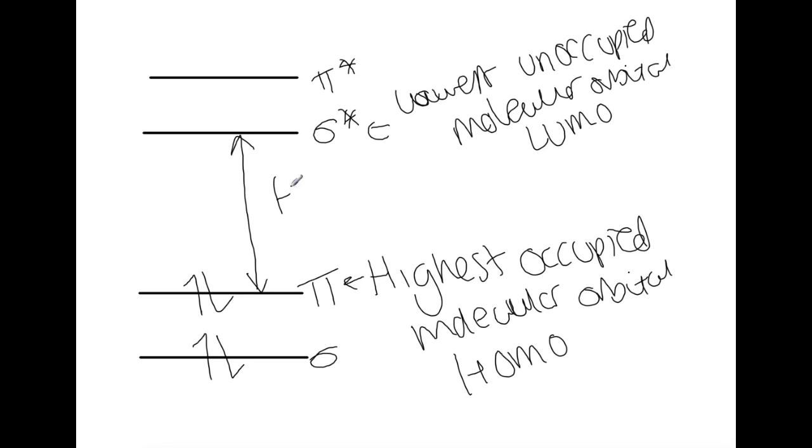So this HOMO and LUMO gap is equal to some energy which will correspond to some sort of wavelength of light. And normally that wavelength will be in a region that is outwith the visible spectrum.